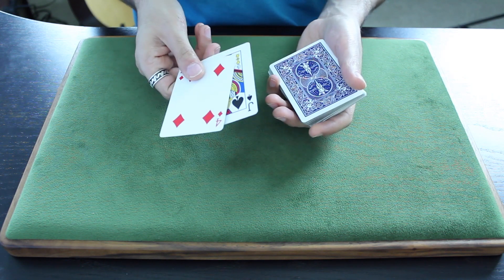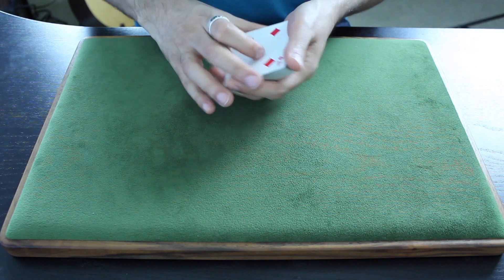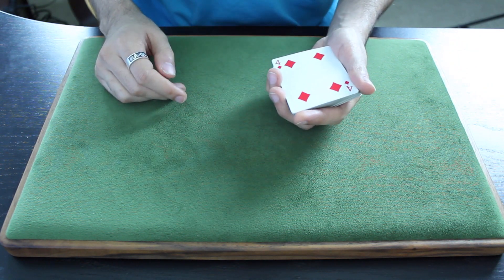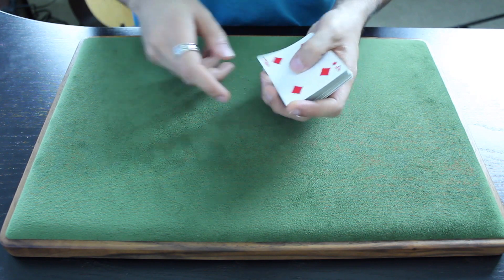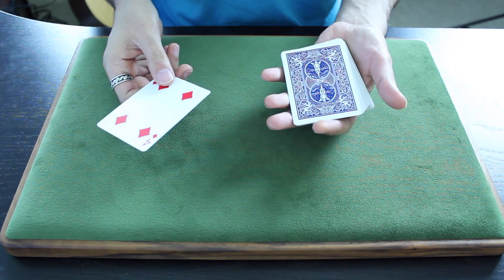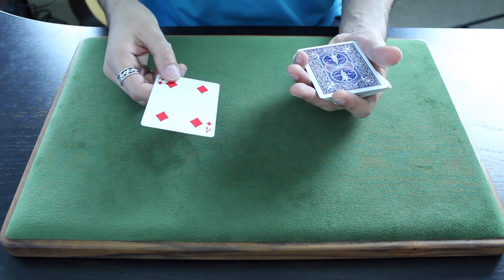So we have the four of diamonds here. This is a double lift. But let's say someone called me out here and said, oh, you're just holding two cards. At this point, I could do the KM move to show that, no, I'm actually just holding one card. So it's used as a cleanup in that case.